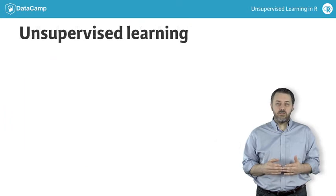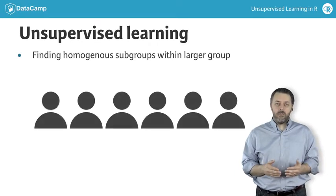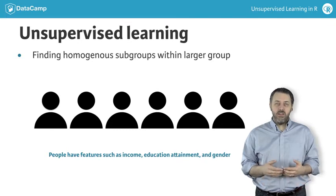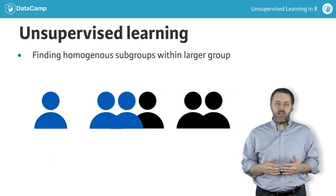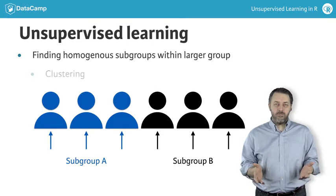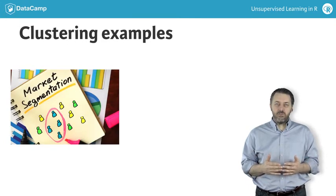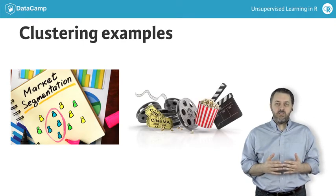Within unsupervised learning, there are two major goals. The first goal is to find homogeneous subgroups within a population. For example, with a population of six people, each with features such as annual income, educational attainment, and gender, one might find two homogeneous subgroups — labeling them subgroup A and subgroup B. This process is referred to as clustering. Applications include segmenting a market of consumers based on demographic features and purchasing history, or finding groups of movies based on movie features and reviews to find movies most like another movie.